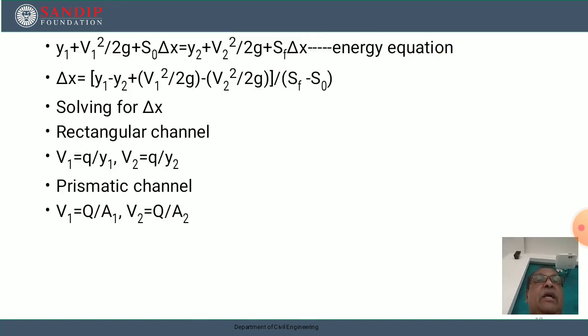By applying the energy equation at two sections we get y₁ + V₁²/2g + S₀·Δx = y₂ + V₂²/2g + Sf·Δx. From the above equation, rearranging terms, we can find Δx = [y₁ - y₂ + (V₁²/2g) - (V₂²/2g)] / (Sf - S₀).